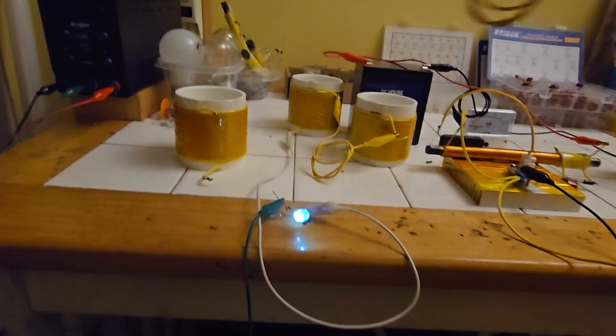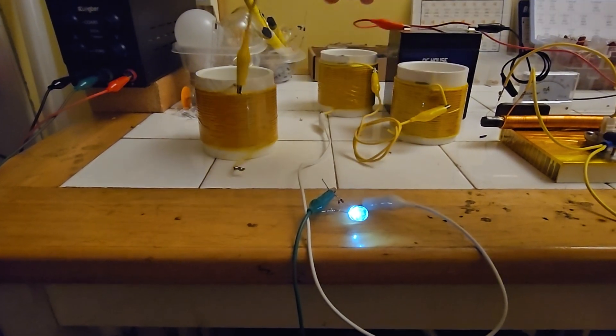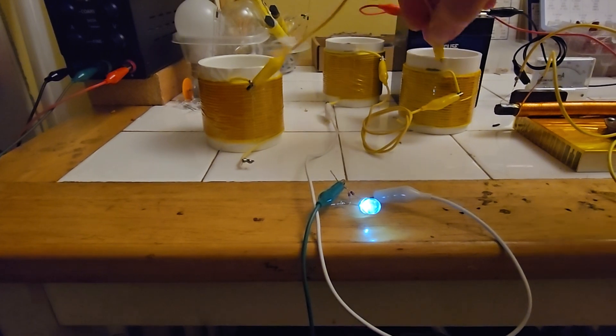So again, if I add a third coil even at a distance, it'll still get brighter because it's some type of weird effect occurring. So now I will connect another coil and it's at some distance from the device, and it still gets brighter.